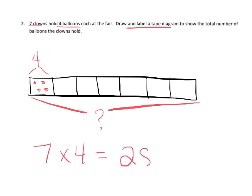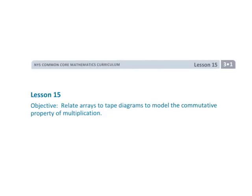We count up and get 28, so seven times four equals 28. The key point of this lesson is that students recognize the commutative property: seven times four is 28. That wraps up Grade 3, Module 1, Lesson 15.